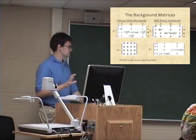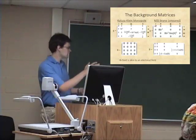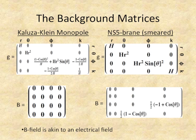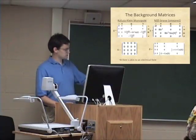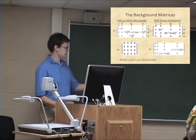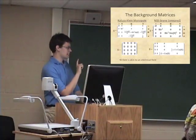Here are the background matrices that describe these objects. I've included the metrics for both of them — remember, that's just the shape of space — and they look more complicated because they're now describing curved space. This column and row are both in the K position, which denotes that extra dimension. I've also included a B field, which is akin to an electrical field — it describes something similar to an electrical field that shows up in these string objects. I should note that this is a smeared NS5 brane solution, meaning it's averaged around the extra dimension.